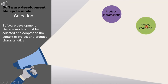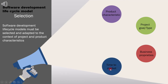Next is project goal and type. The goal of your project will also influence the decision. After that is business properties, which talks about the kind of resources you have available and the type of organization you're working in. Then you have time to market — the product's release schedule can also decide what type of model you choose.